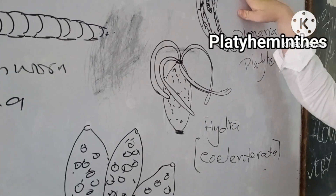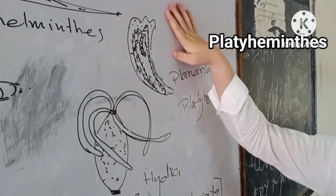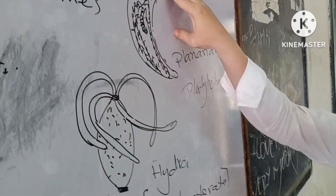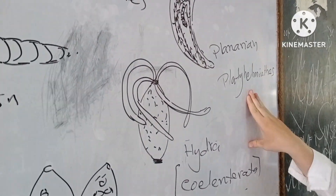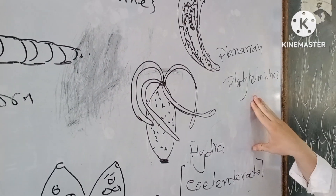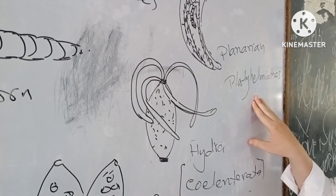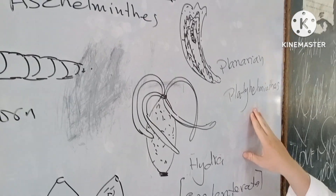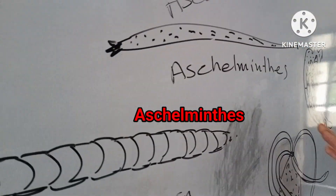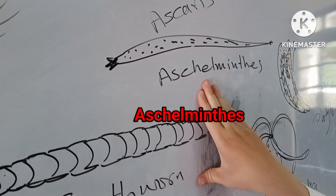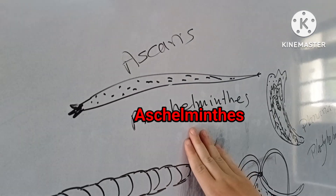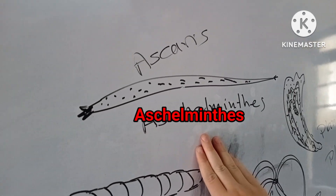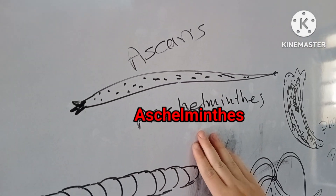This is Planaria, which we always studied in both classes, and it belongs to phylum Platyhelminthes. This is Ascaris, and it belongs to phylum Nematoda.